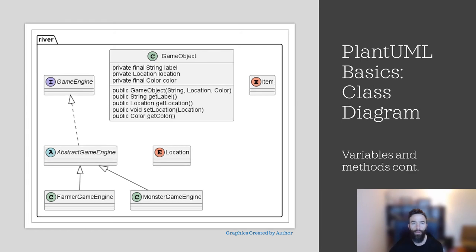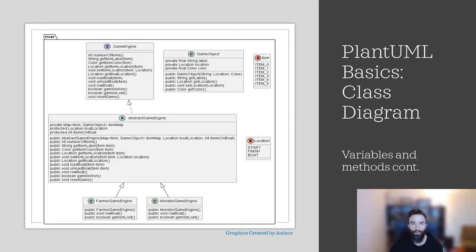Now we have our GameObject class complete and we need to do the rest. I went ahead and fast forwarded here — I don't show the syntax because it gets a bit longer as you add all the class variables and methods. But here's the final product. While this does list all the information in a basic class diagram, it's a little hard to read and could be refined a bit. Or should we say refactored?